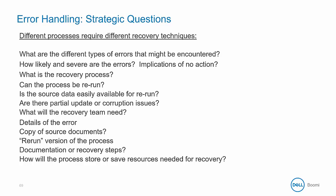Different processes require different recovery techniques, so ask yourself the following diagnostic questions. What are the different types of errors that might be encountered — are they document level, process level, data-related, or connection-related? How likely and severe are these errors, and how often might they occur? What are the implications of not taking action? What's the recovery process — can the process be rerun or is the source data easily available? Are there partial updates or corruption issues when data flows through a branch but can't be rolled back? What will the recovery team need — what kind of details, source documents, or documentation? And how will the process store or save resources needed for recovery?